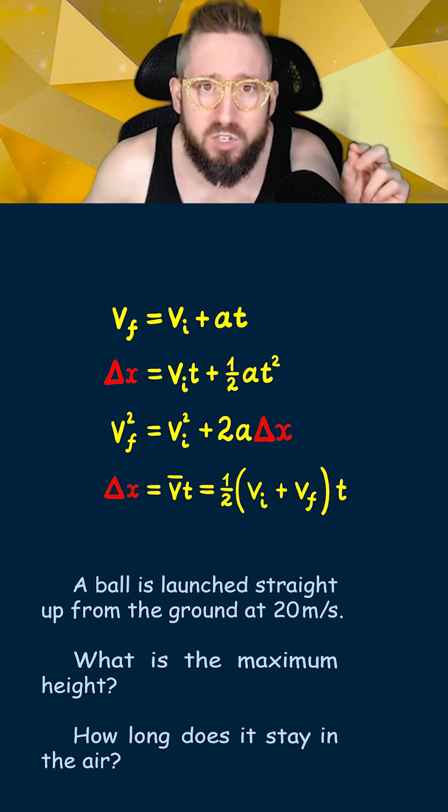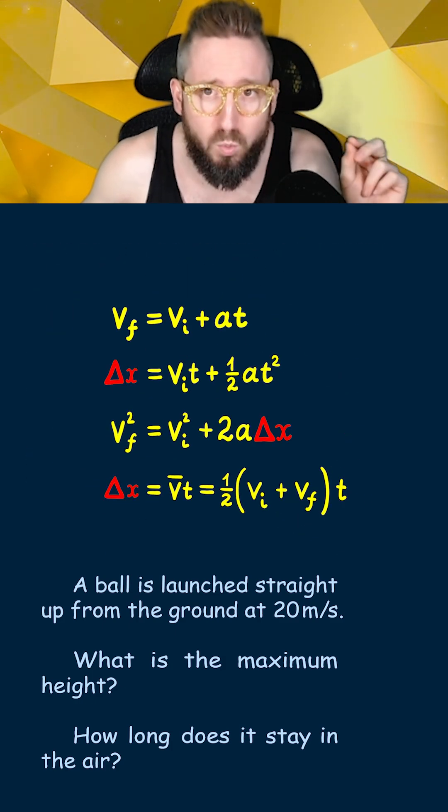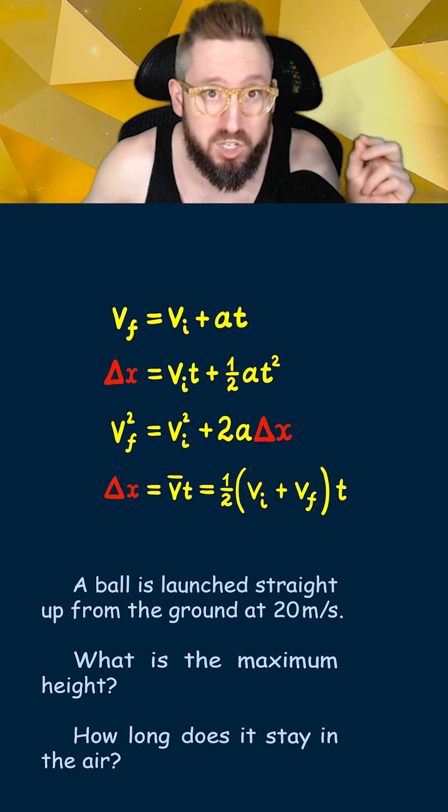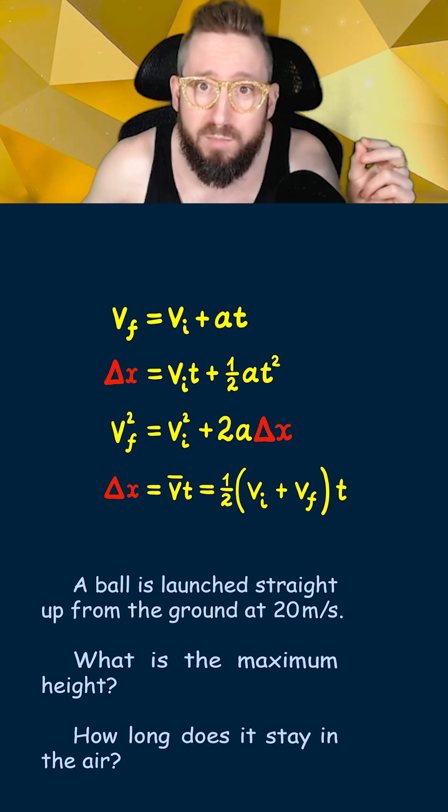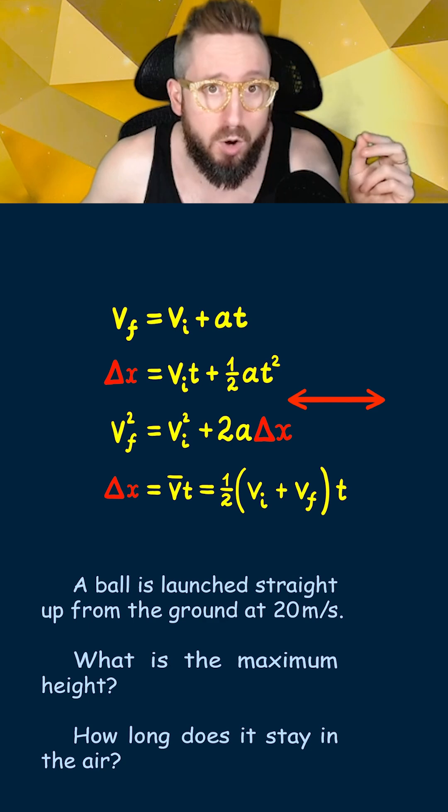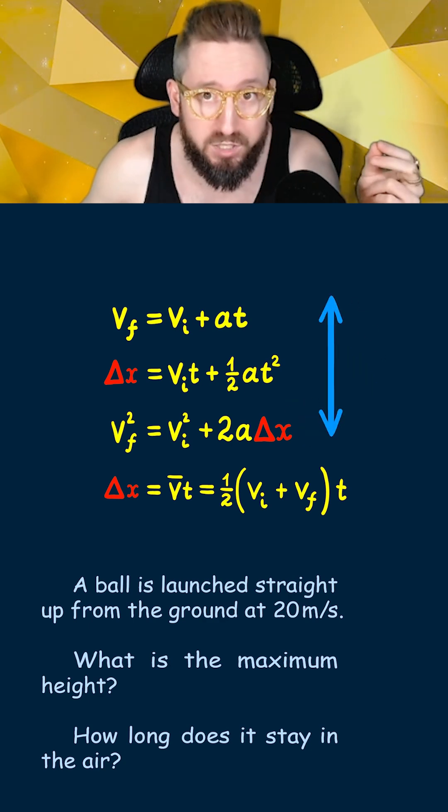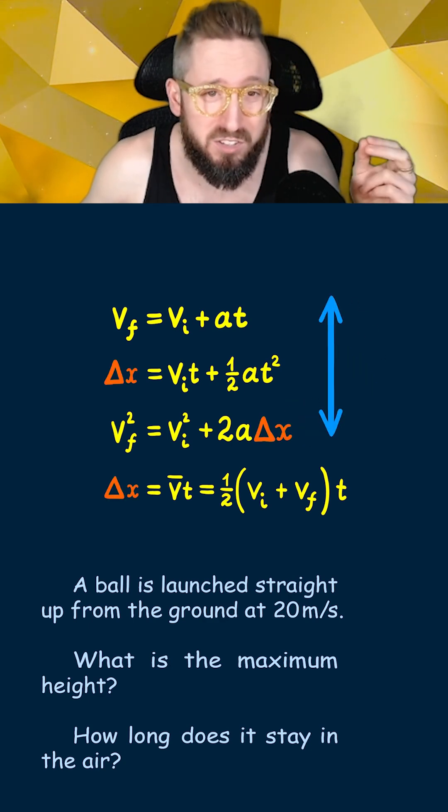Special note: delta x in these equations just refers to the change in position in one dimension, not the specific direction of that dimension. So while x usually means only going left or right, in our problem we're just dealing with the up and down direction. You can think of the delta x as a delta y if that makes it easier.